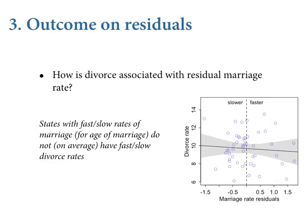Let's do the other case — how is divorce associated with residual median age of marriage? On the left column is the analysis we just did: we predicted marriage rate using median age of marriage, computed those residuals, then predicted divorce rate using those residuals, and saw there's not a lot going on. To do the same thing for median age of marriage, we just flip these axes. Now we're predicting median age of marriage using marriage rate, and we get a different set of residuals.